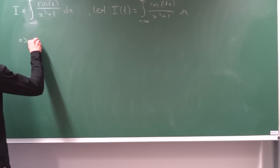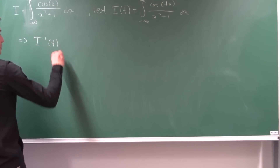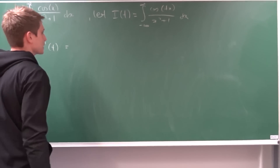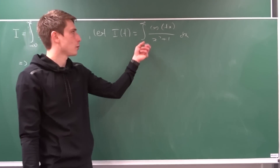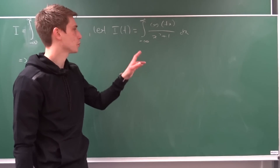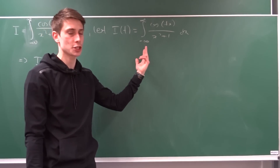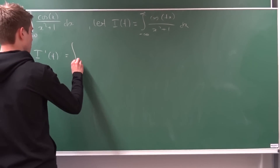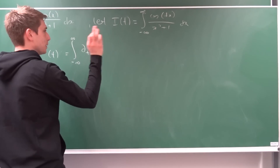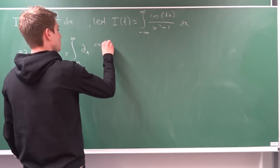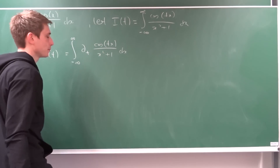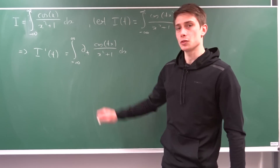So first, I prime in terms of t — we are differentiating with respect to t. The upper and lower bounds aren't dependent on t, so we can use the special case of the Leibniz rule for integration and interchange the differential and the integral sign, turning it into a partial derivative. We now have the integral from minus infinity to infinity of the partial derivative with respect to t of cosine(t·x) over (x² + 1) dx.